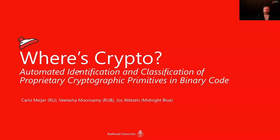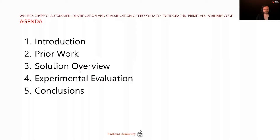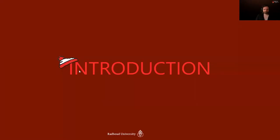Hello and welcome everyone. My name is Jos Wetzels and I'll be presenting this joint work with Carlo Meyer, Villas, and Bonsami on the automated identification and classification of proprietary cryptographic primitives in binary code. Today we'll start with an introduction and some prior work, then move on to a solution overview, experimental evaluation, and conclusions.